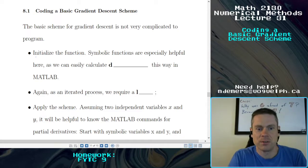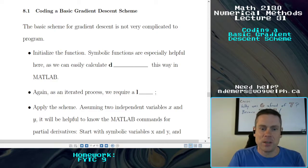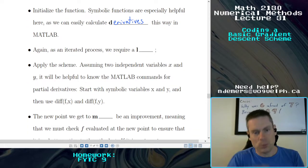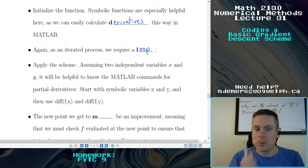You need to initialize the function. There's no way that we're going to be able to code gradient descent for a certain function if we don't know what the function is. Symbolic functions are especially helpful here as we can easily calculate derivatives which are going to be very useful for this in MATLAB. So we're iterating a process again and again that sounds like a loop to me and then we're going to apply a scheme.